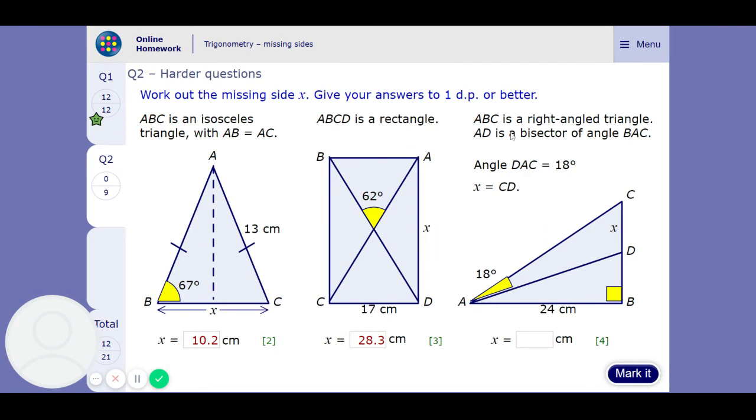Okay, last one. ABC is a right angle triangle. AD is a bisector, so x is the same up here and up here. Angle DAC equals 18 degrees. So D to A to C is 18 degrees. Okay, so what we can do here is we can work out...